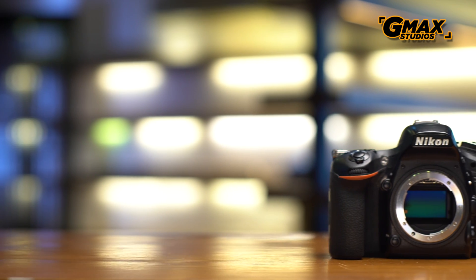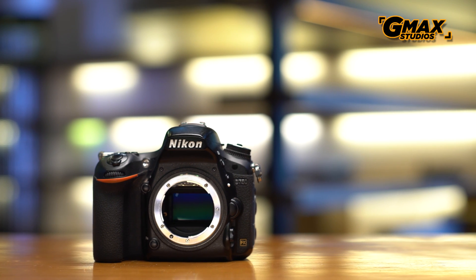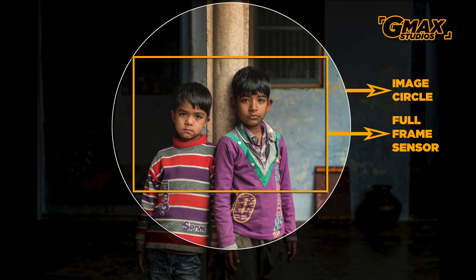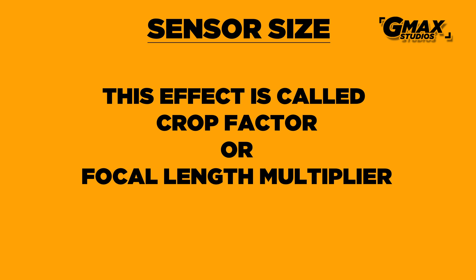The first thing that gets affected by different sensor sizes is the focal length of the lens you are using. Since most lenses were made according to the 35mm full-frame sensor size, if your camera has a full-frame sensor there is obviously no change. But if you are using a camera with a smaller sensor, it is able to capture only a portion of the entire image circle, therefore seeming as if the image has been zoomed in. This effect is called crop factor or focal length multiplier.